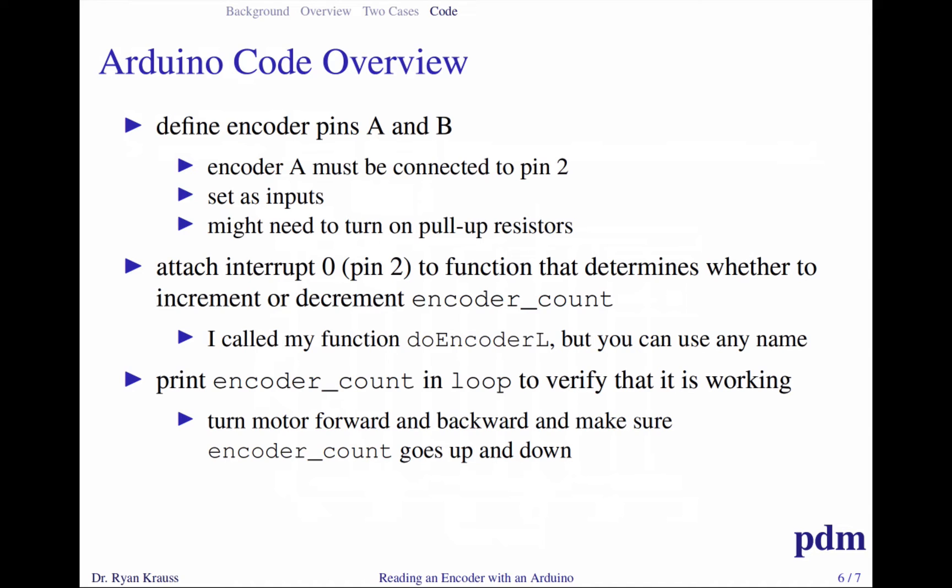An Arduino Uno only has two pin interrupts. They are interrupts zero and one, but they are connected to pins two and three. If you have a robot like my students are making and you have two different wheels with two different encoders, you can only have one pin interrupt per side of your robot for the left and the right. We're going to hook up encoder A for the left wheel to pin two and encoder A for the right wheel to pin three.